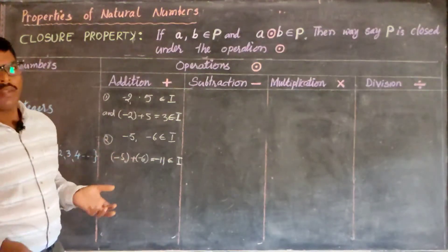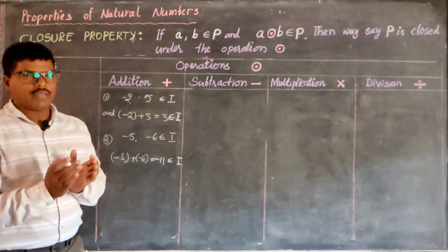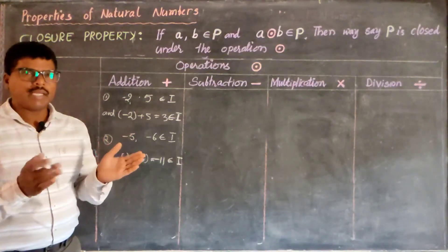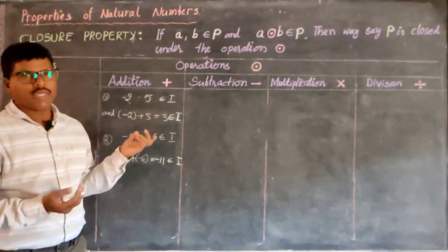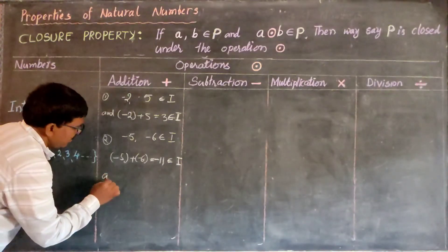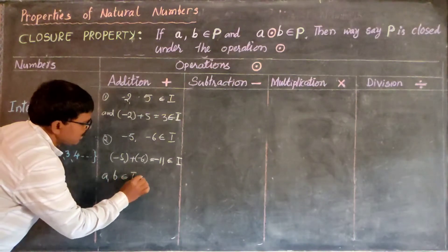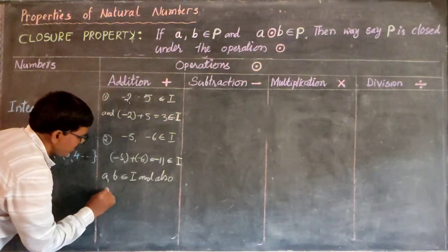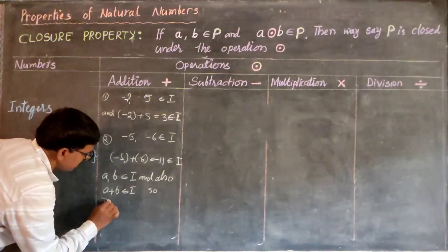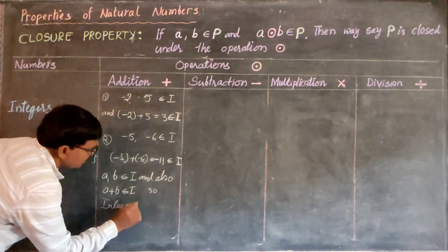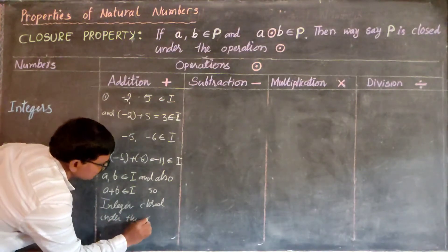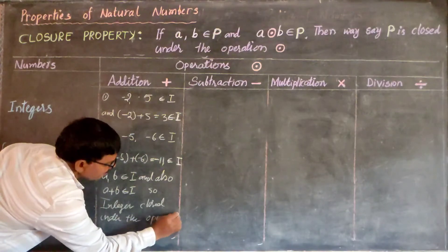From these examples, if you take any two integers and add them, we again get an integer number. So the sum of two integers is again an integer. We conclude that integer numbers are closed under addition. So if a, b belong to integers, then a plus b also belongs to integers. Integers are closed under the operation addition.